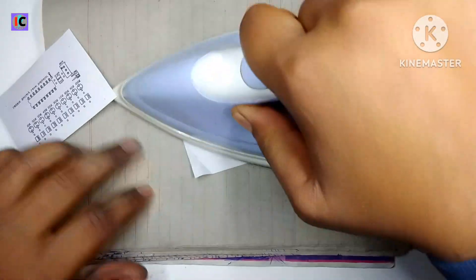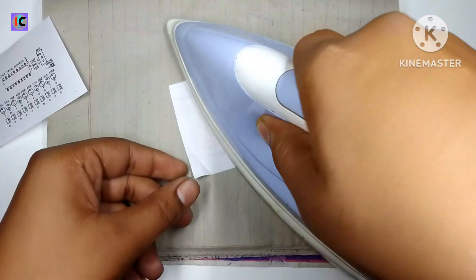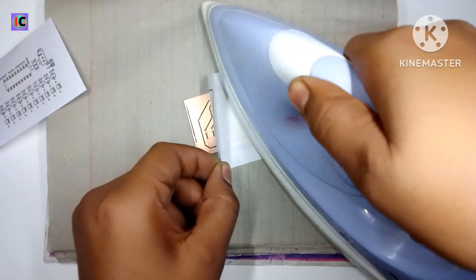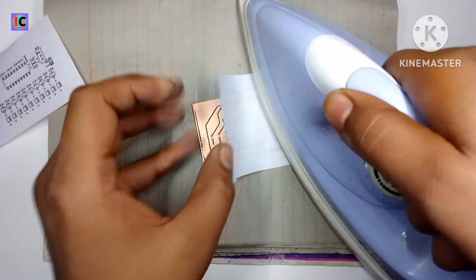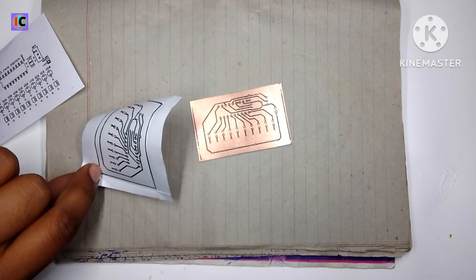Now slowly pick the paper and remove it instantly, as if you stop then it will require heating again.